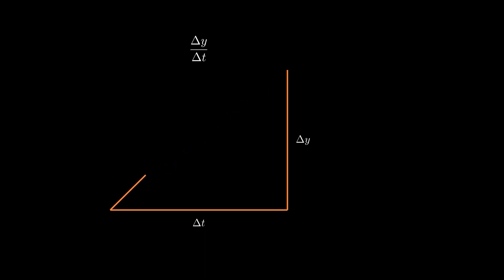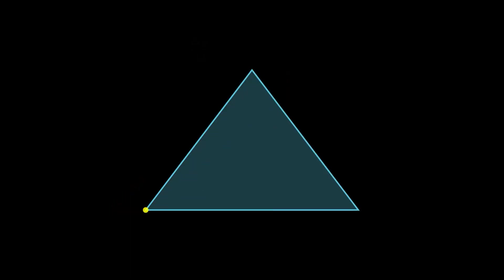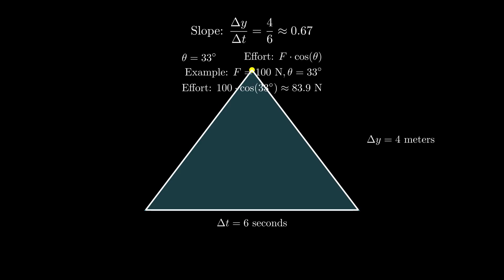By focusing on this triangle, we see that the slope is the elevation change divided by the time taken. As the slope angle increases, pedaling becomes more difficult, requiring greater effort to maintain speed. With a slope of 0.67 and an angle of 33 degrees, the cyclist needs about 83.9 newtons of effort to climb up this hill.